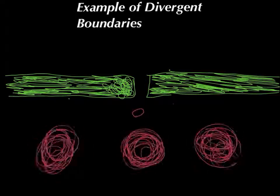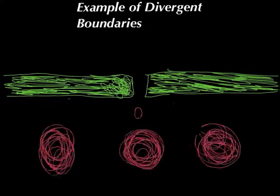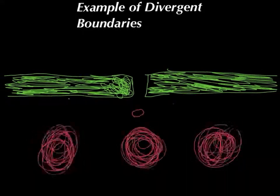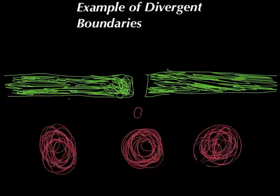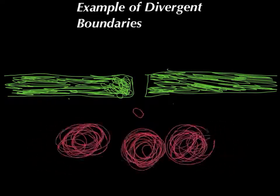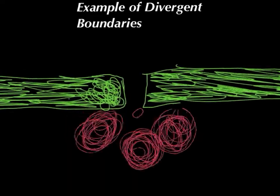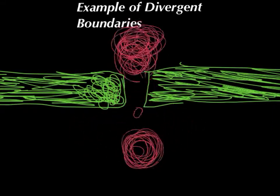Two plates move apart from each other. As they move apart, the mantle is really hot, it's boiling hot. It makes a hole in the earth and the mantle comes out.